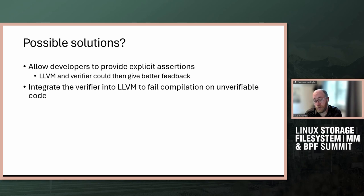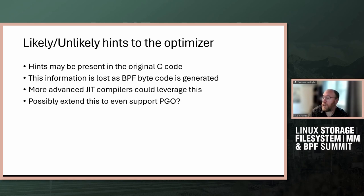On the GCC side, we have the same problems and are starting to think about how to work this out. By the way, one question about those likely/unlikely hints — that is for branches, right? For jumps? Yes. So about conveying that to the JIT BPF compilers — I guess we would need to do that by adding a bit to the BPF jump instruction or something.